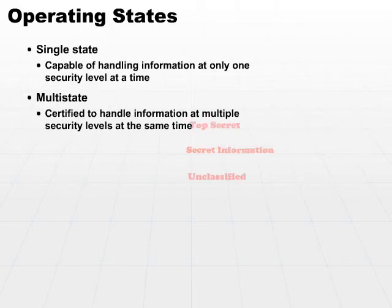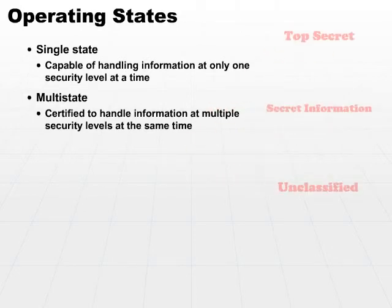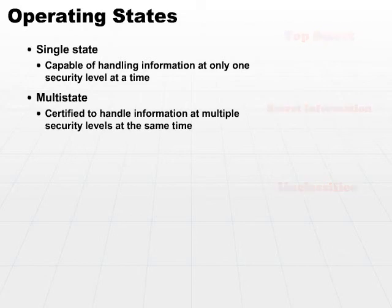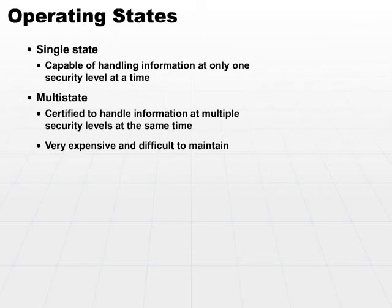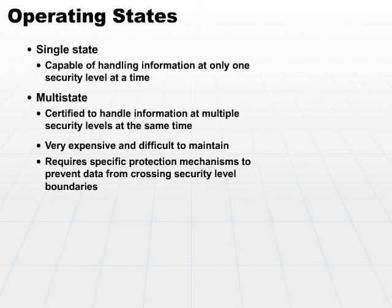The problem with that is that you have all of these documents at different security levels occupying some piece of memory. And the problem is that you could copy from one security state or one security level to another security level if you're not very careful. It's very expensive because there's a lot of additional controls that must be in place. It's also fairly difficult to maintain because there are many places where these inadvertent copies could occur. In order to implement a multistate operating environment, you must have specific protection mechanisms that prevent that data from crossing the security level boundaries.